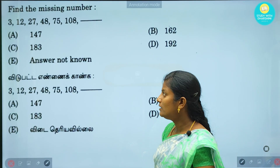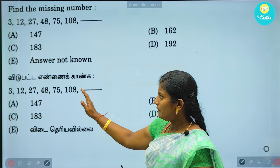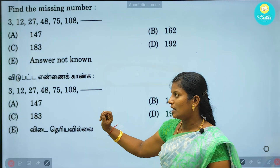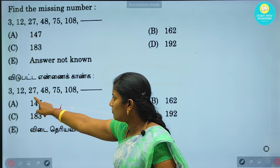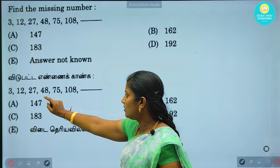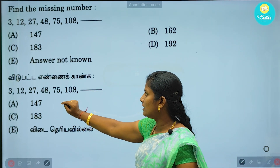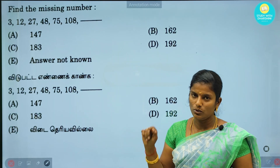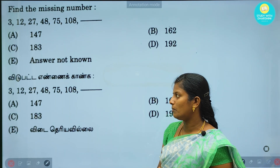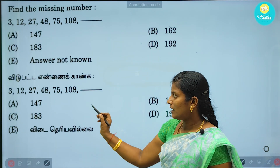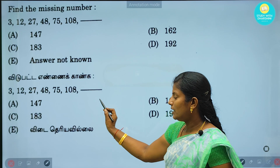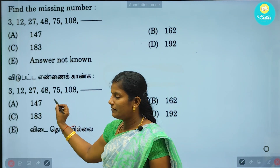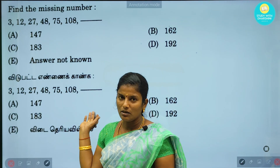Next question. What is the difference here? 3, 12, 27, 48, 75, 108. We will solve the number. Now if you look at the difference, there is a pattern. We will add 1 by 1— it will be less than the difference.